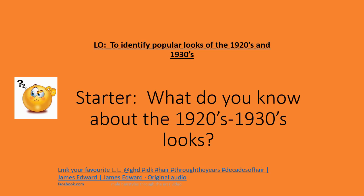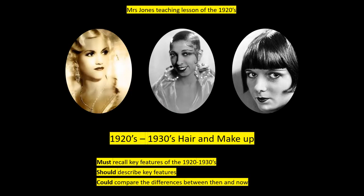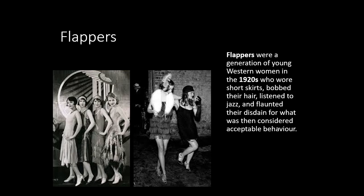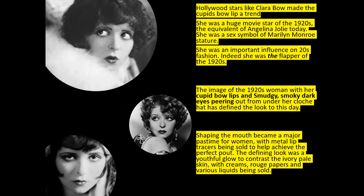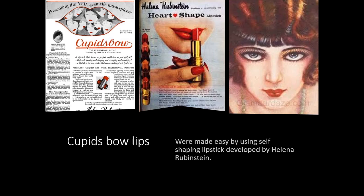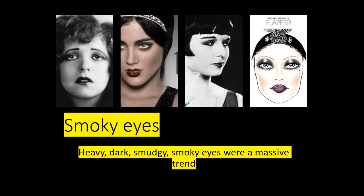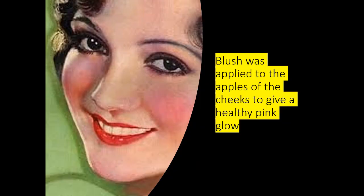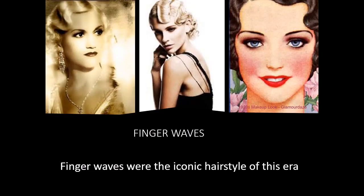This is what I showed my class last year when we were going through the eras and looking at different 1920s and 30s looks. There are lots of pictures and information about flappers, stuff about Clara Bow, the Cupid Bow lips, and the smudgy, smoky dark eyes.